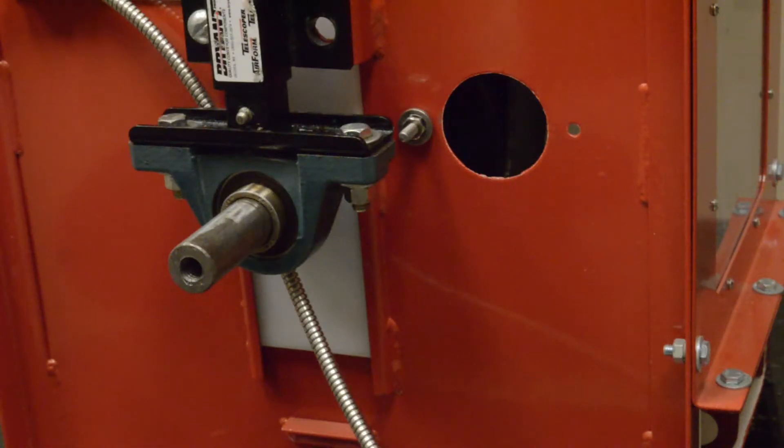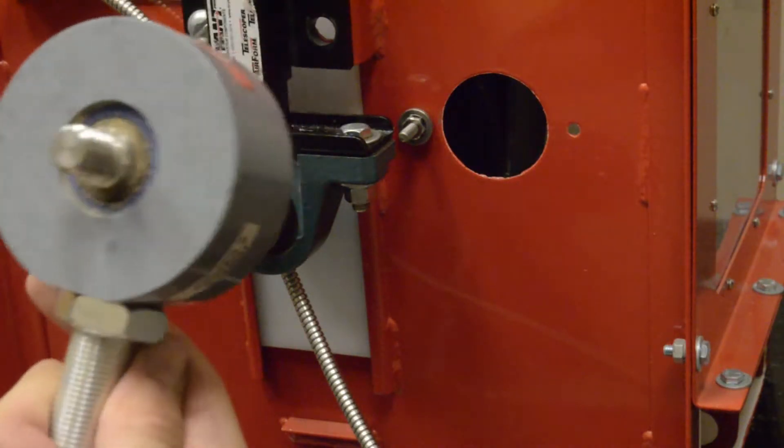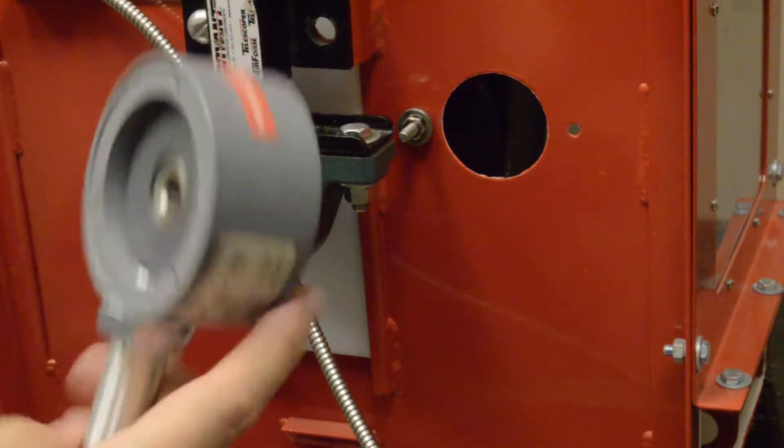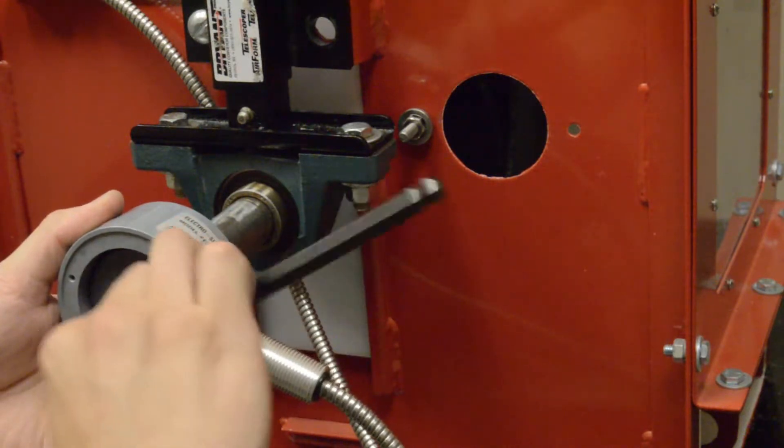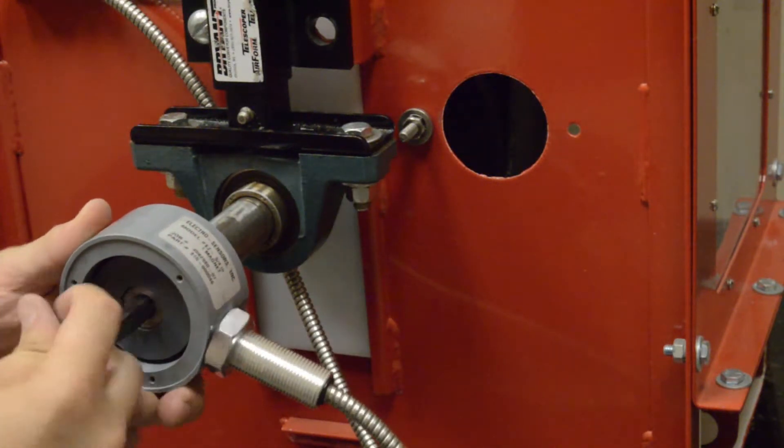If needed, drill and tap your shaft for a ½ inch 13UNC thread to a depth of 1 inch. Remove the sensor cover and attach the sensor to your shaft with the hex bolt contained.